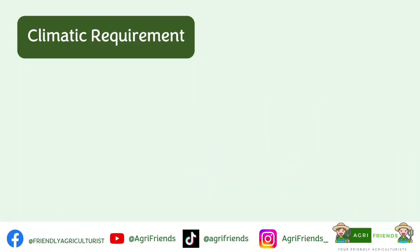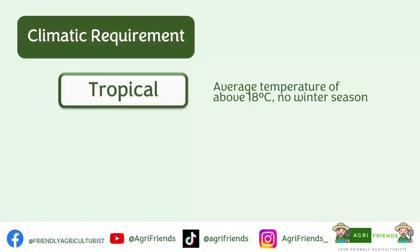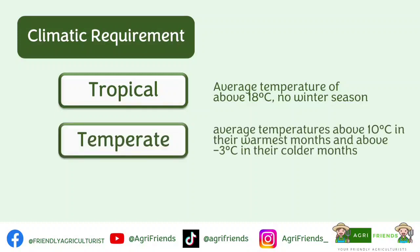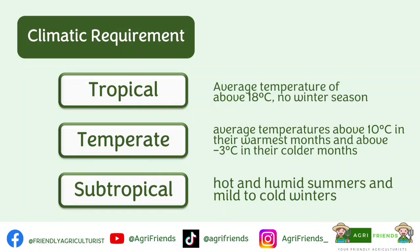Classification of crops based on climatic requirement — there are three. Tropical crops are characterized by an average temperature above 18 degrees Celsius and they do not have a winter season. Temperate crops have average temperatures above 10 degrees Celsius during their warmest months and negative 3 degrees Celsius in their colder months. Subtropical crops are described as having hot and humid summers with mild to cold winters.